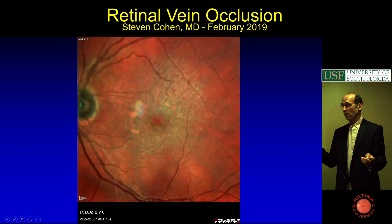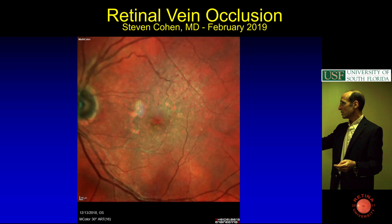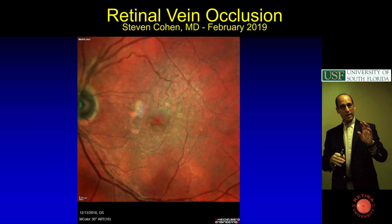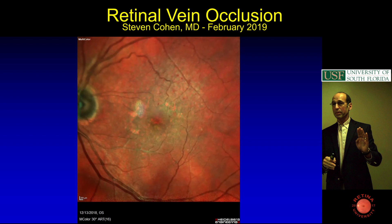Is this wet AMD or hypertensive retinopathy? It could be, but there's nothing below, nothing really in the center—it's all in that one area. So when you're trying to figure out a branch vein, if there's a vein and the findings are in one region, it's probably a branch vein occlusion.